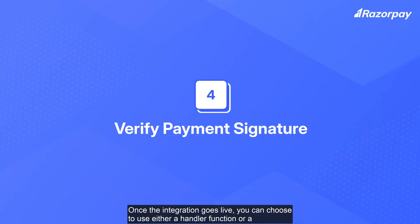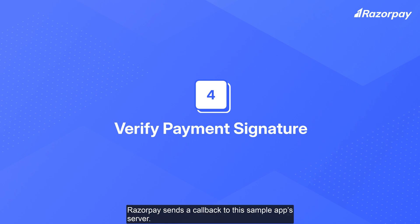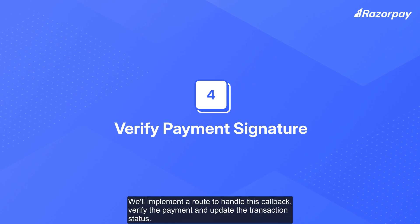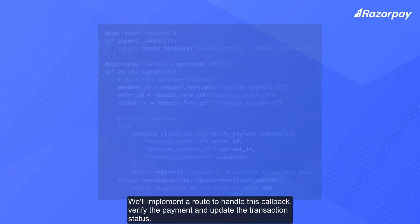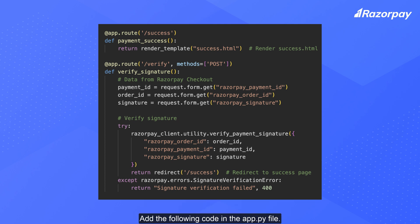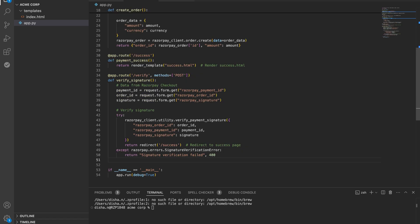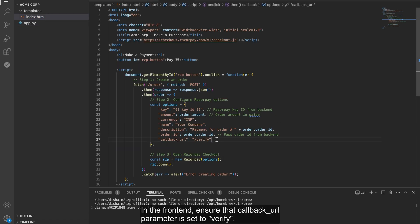Once the integration goes live, you can choose to use either a handler function or a callback URL to process payment responses. In this video, we are using a callback URL. Razorpay sends a callback to this sample app server. We'll implement a route to handle this callback, verify the payment, and update the transaction status. Add the following code in the app.py file. In the front-end, ensure that the callback URL parameter is set to verify.